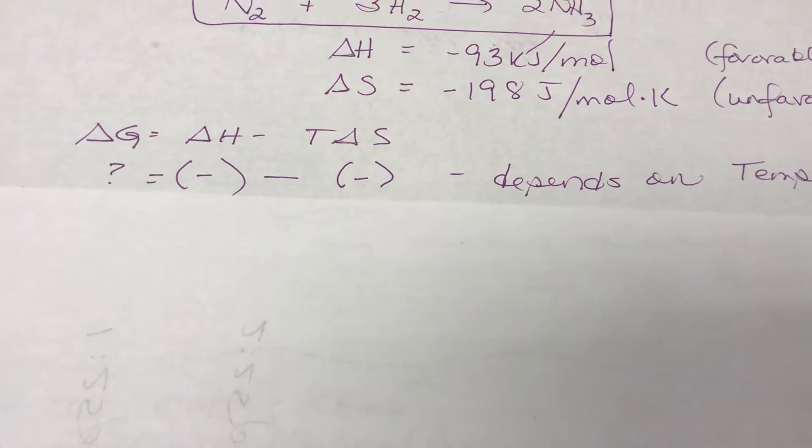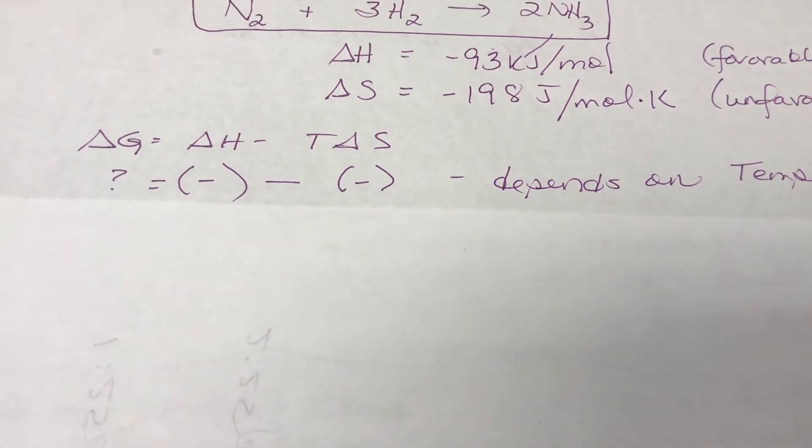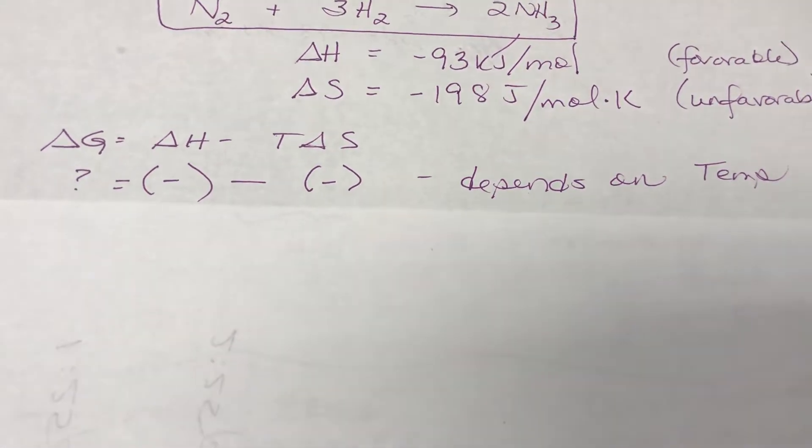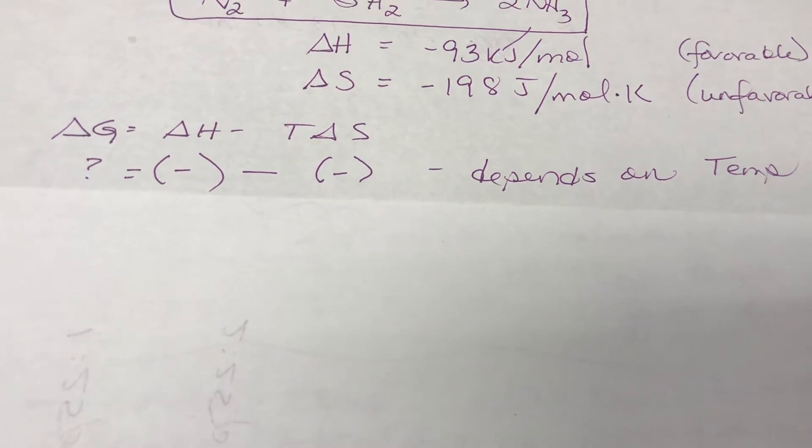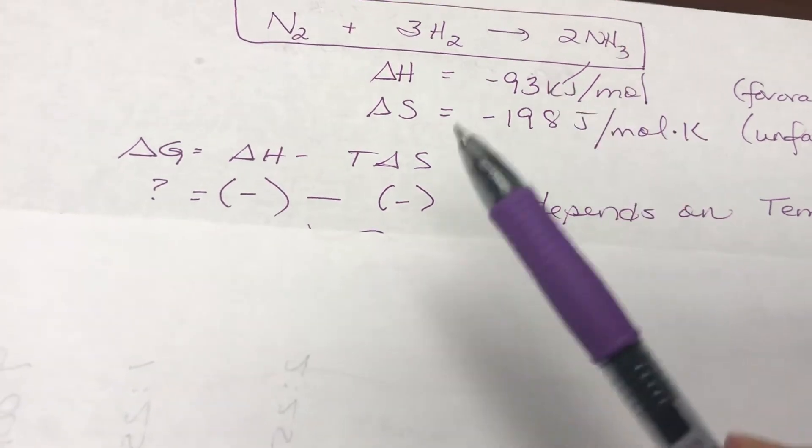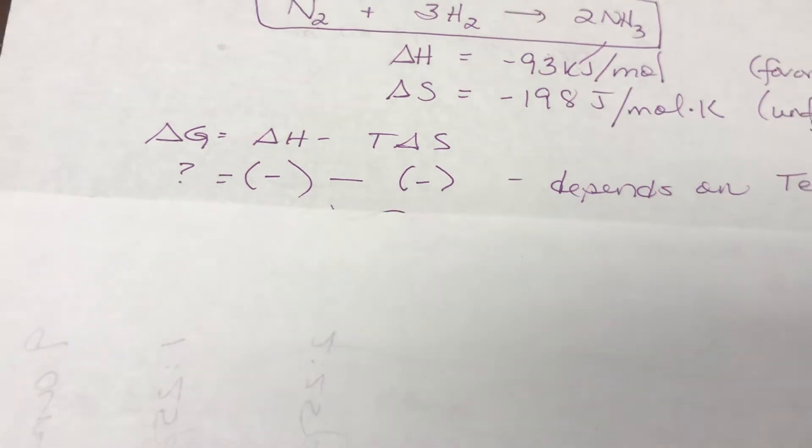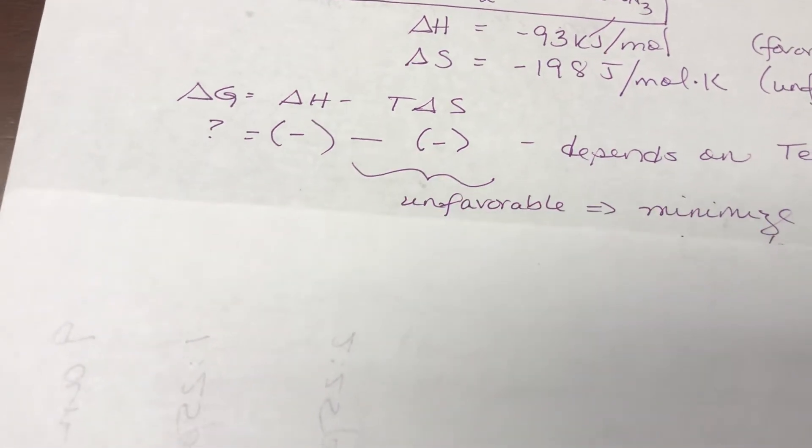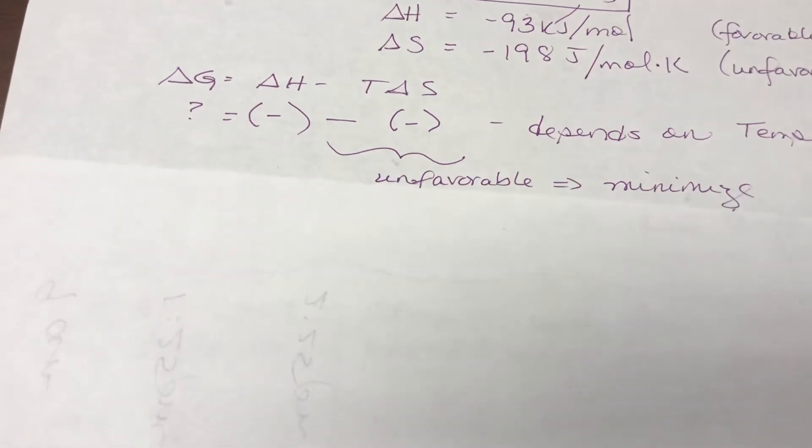So looking at our equation delta G equals delta H minus T delta S, which by the way is the only way to predict spontaneity, and if I plug in the signs for each of them obviously the entropy term is unfavorable and so we want to minimize it.